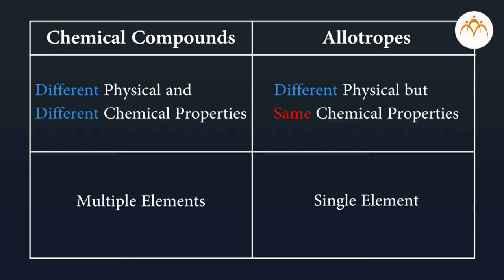One of the key differences between allotropes and compounds is that allotropes are of a single element. So it is only pure carbon that we are talking about here. Whereas in case of compounds or chemical compounds, it is the combination of multiple elements which gives rise to these chemical compounds.